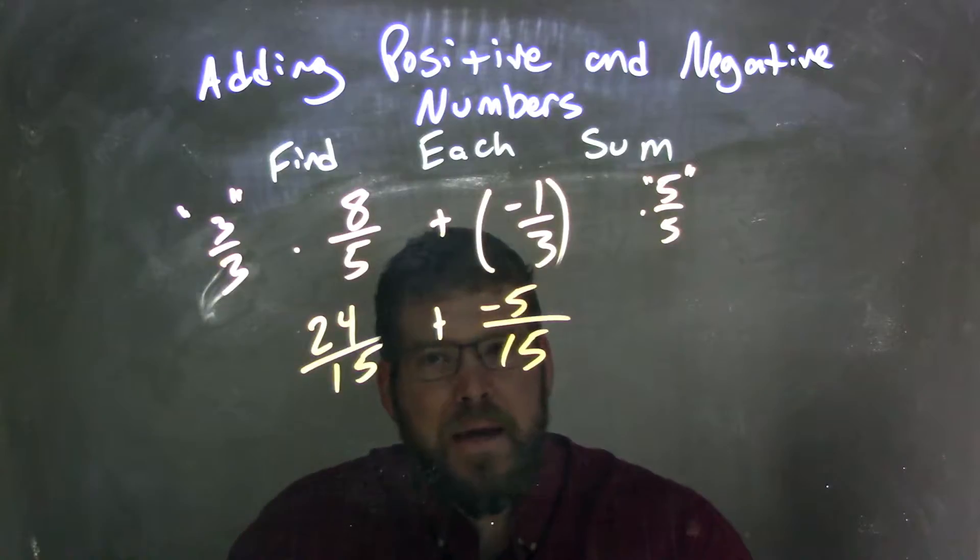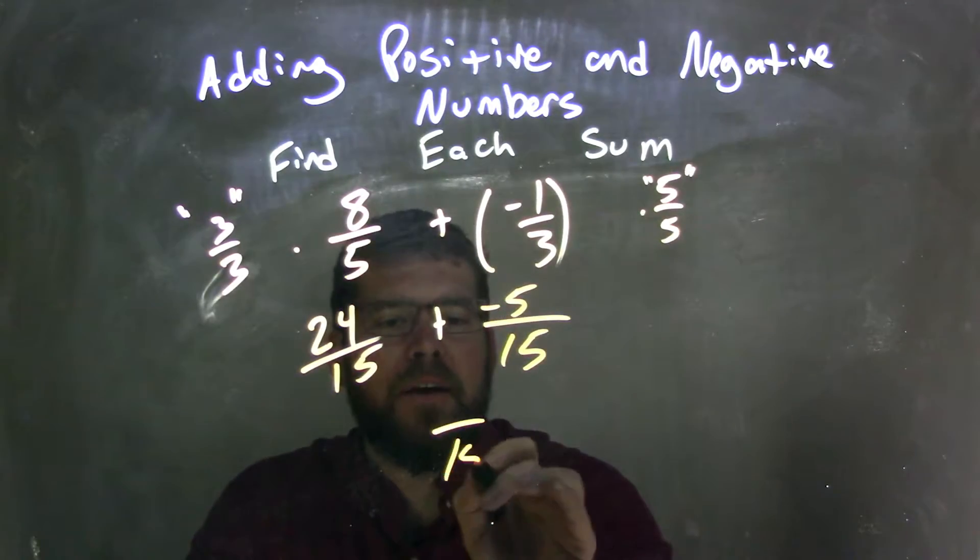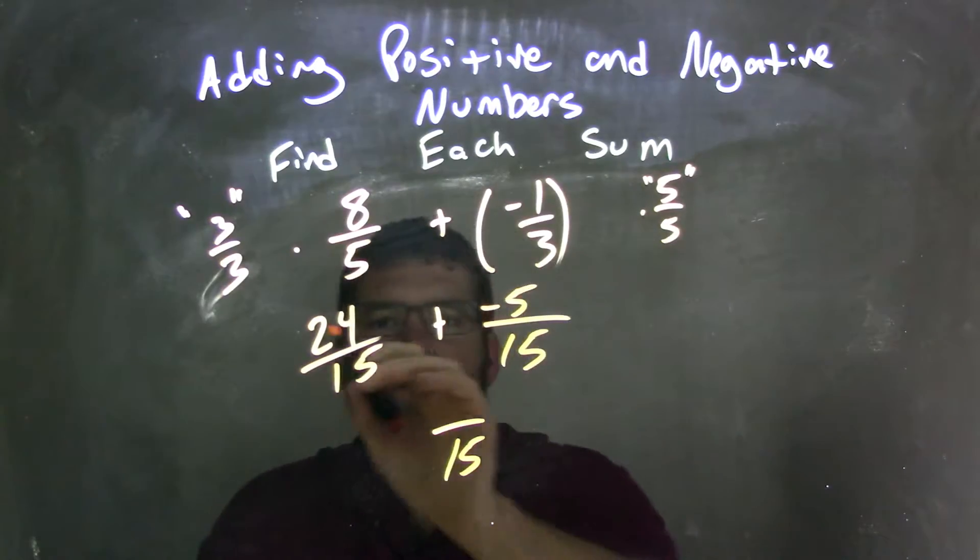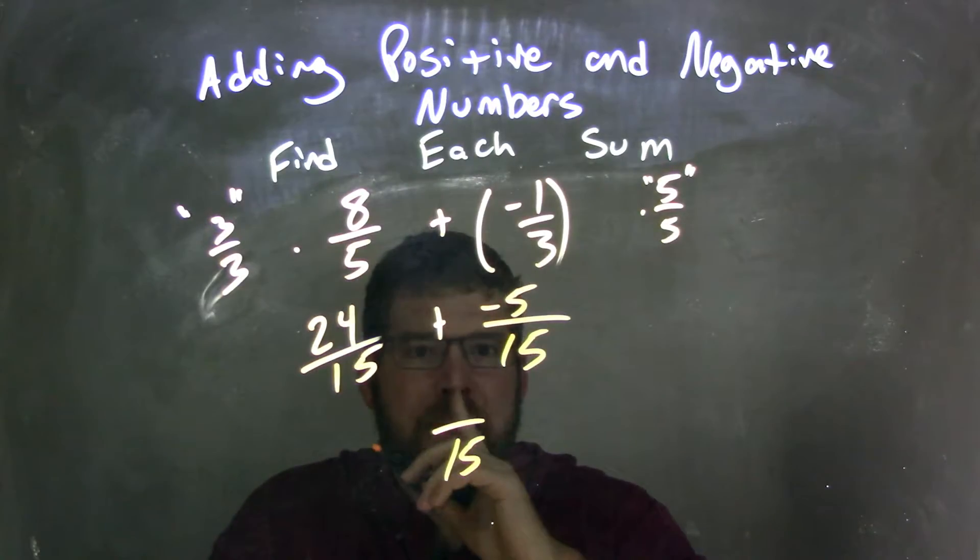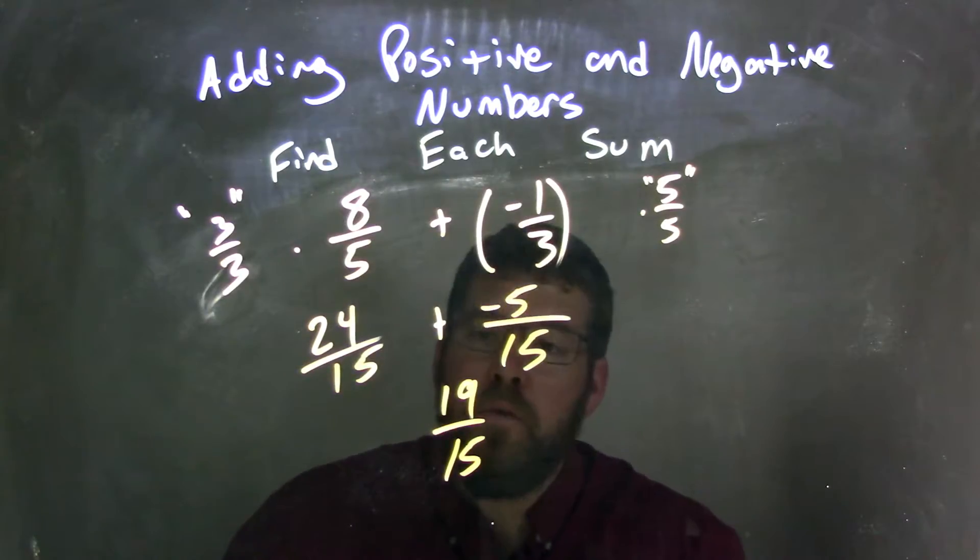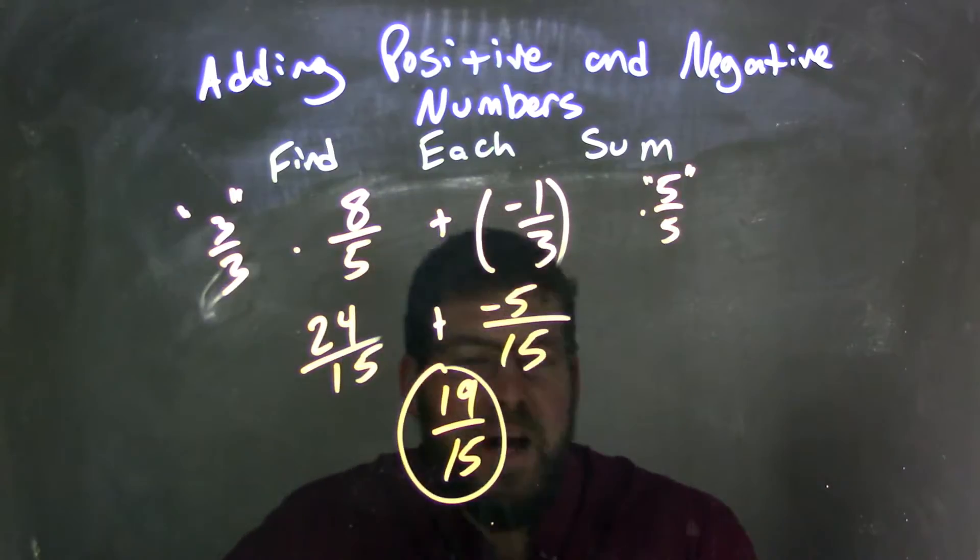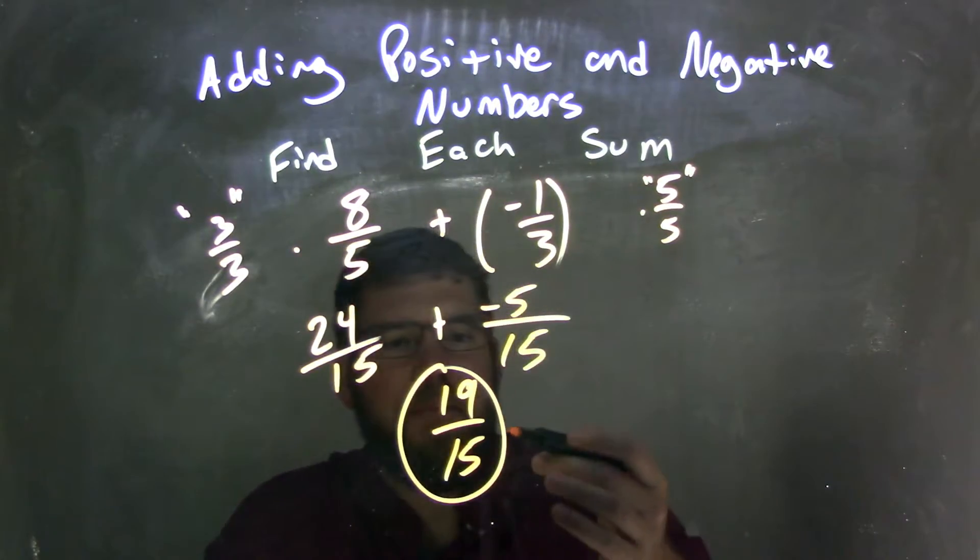Since we have the same base, we can add these fractions together. The same base stays down here, 15, but the numerator is 24 plus negative 5. We can add those together and we get 19. And so 19 over 15 would be my final answer. 24 plus negative 5, or 24 minus 5 is 19. The base is the same. Make sure you keep the base the same.